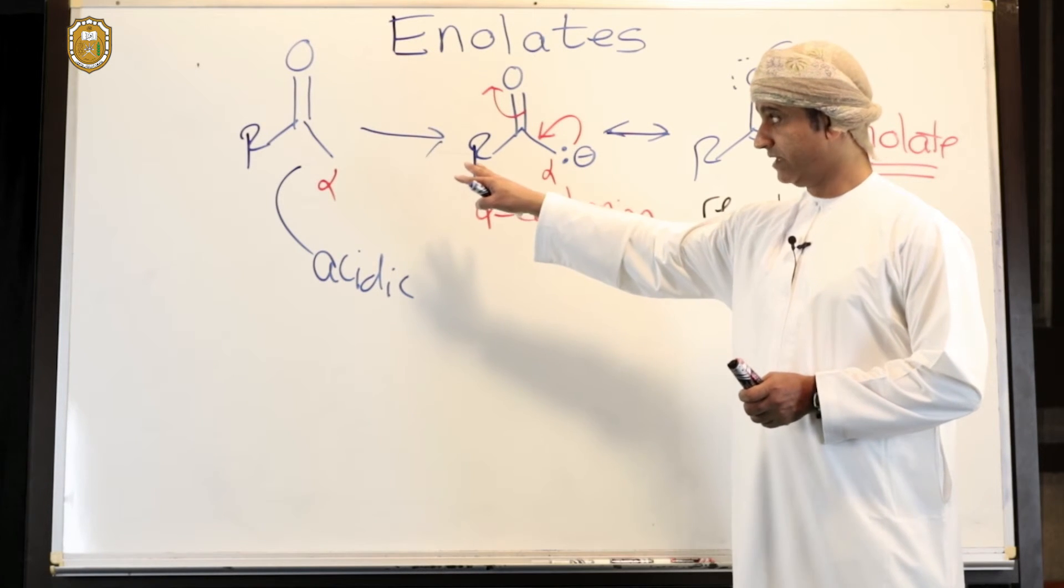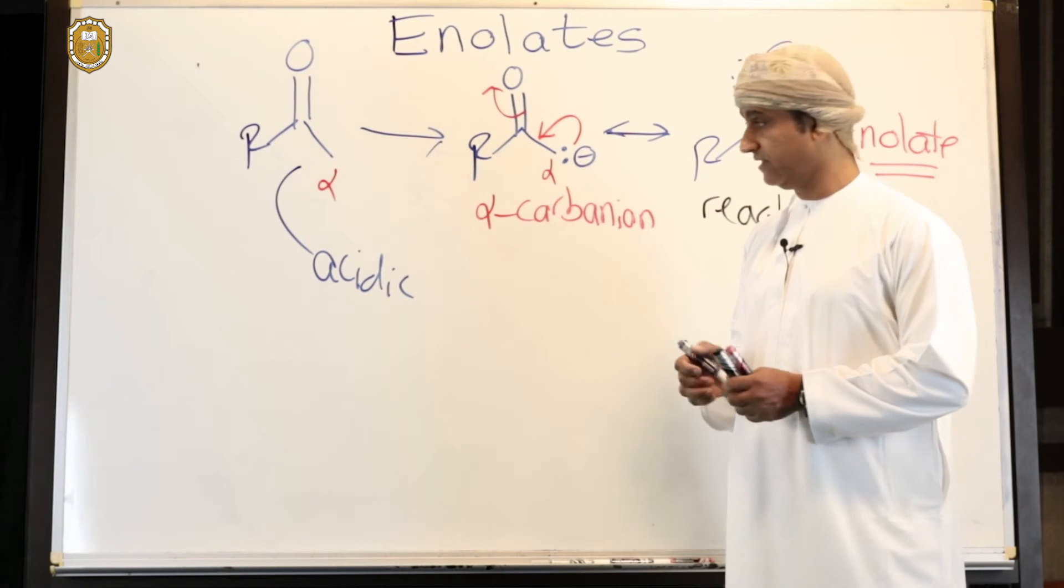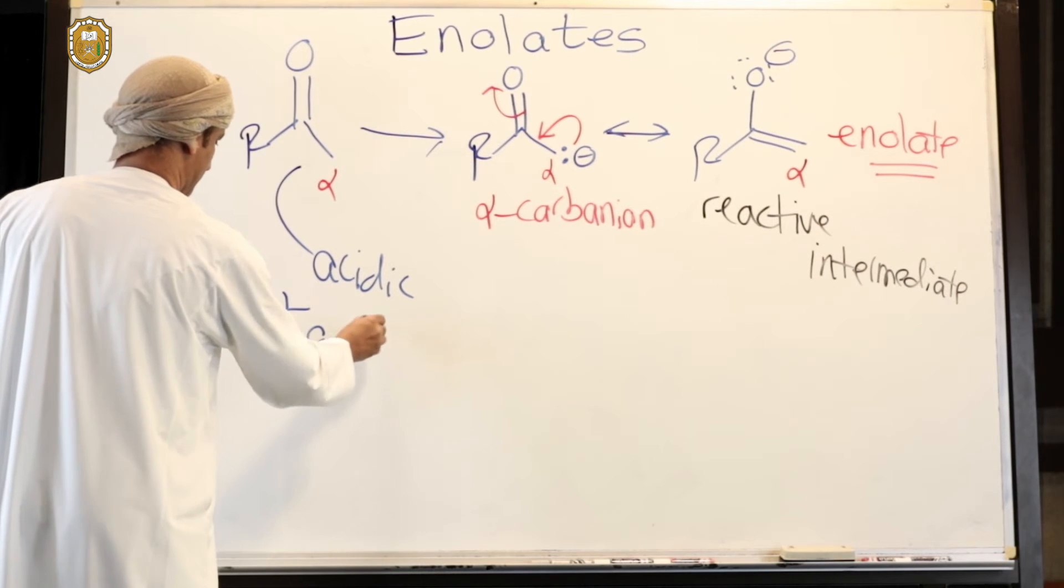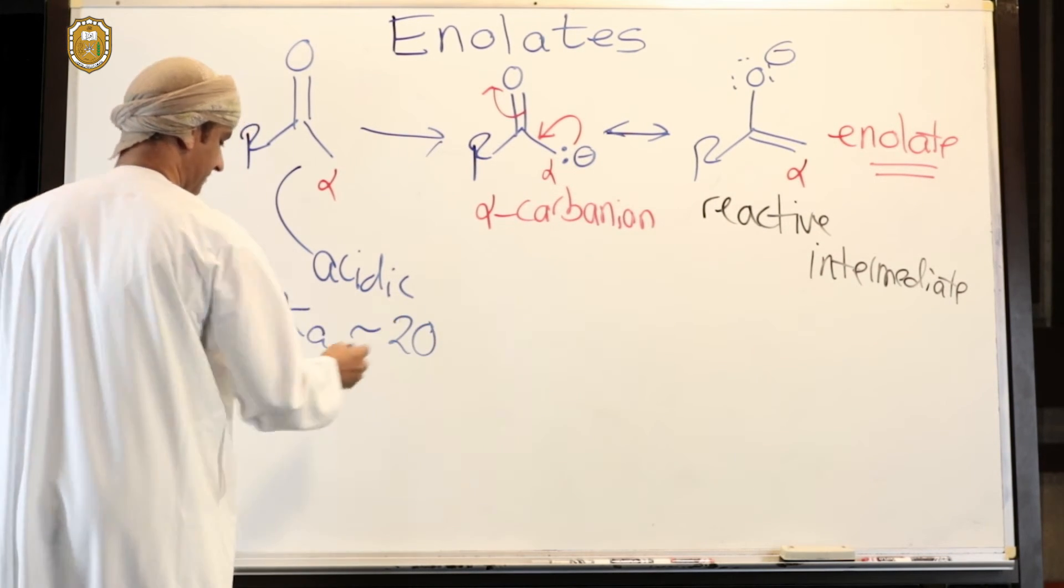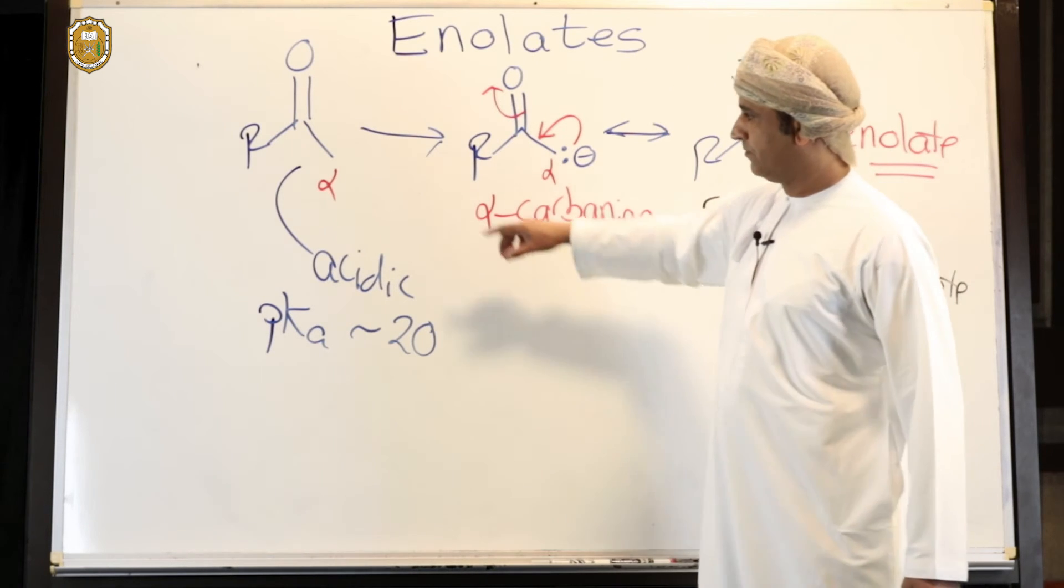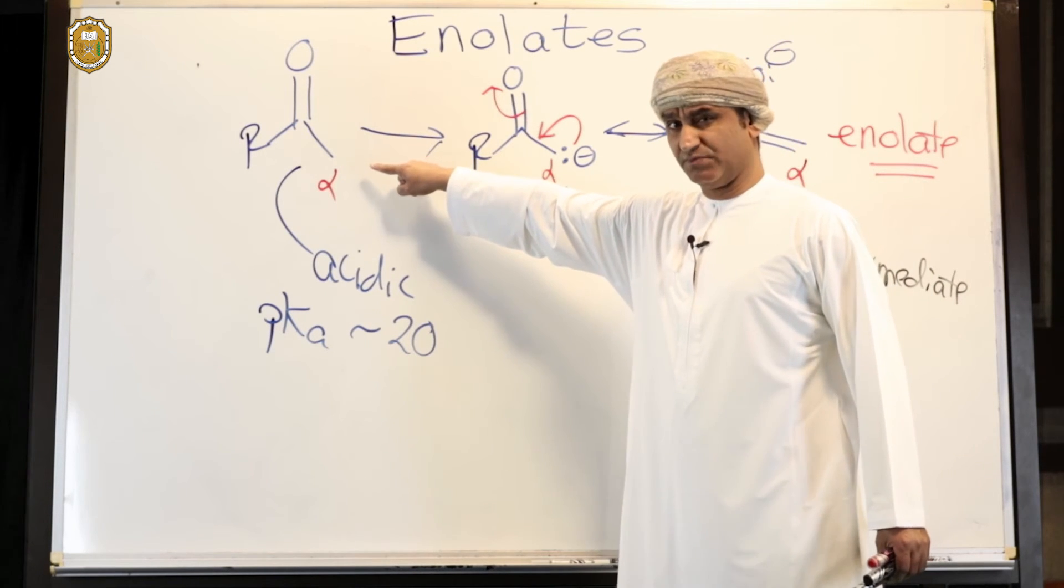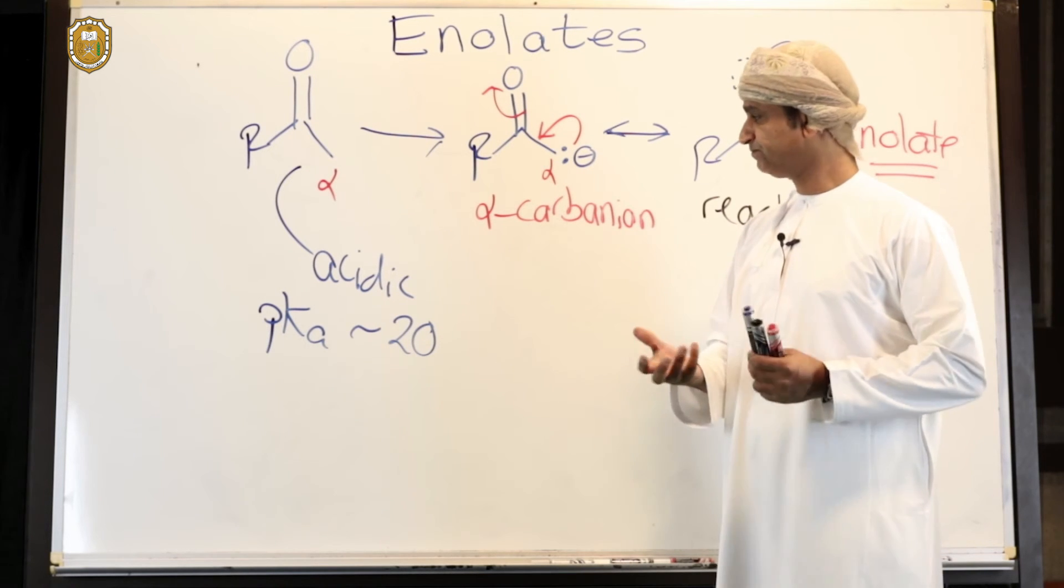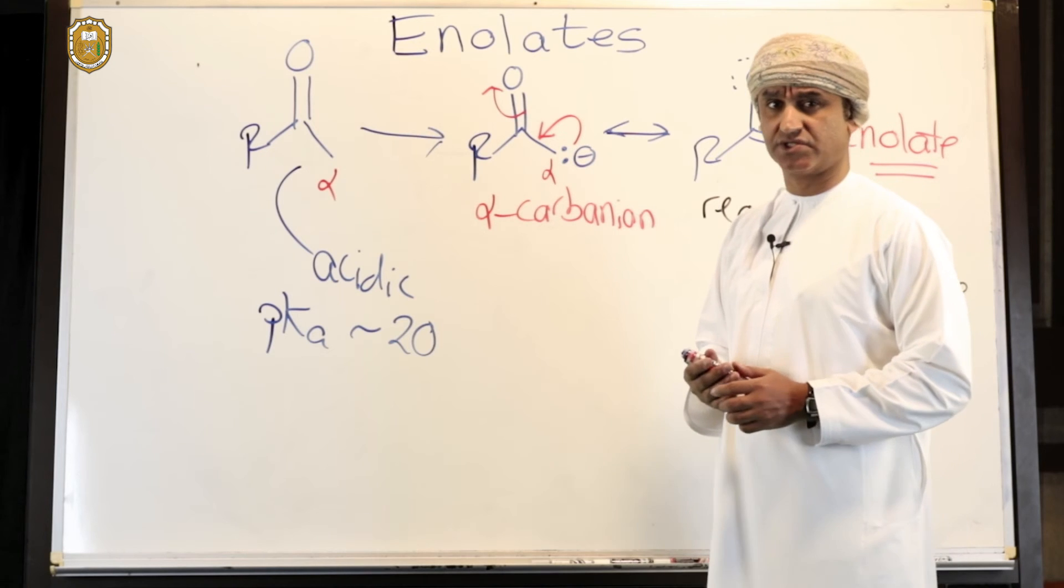The pKa of ketones at that alpha position is about 20. It is 20, the pKa of hydrogens on the alpha position of ketones. For aldehydes, it can be a little bit less, something like 18, around 18 or so.